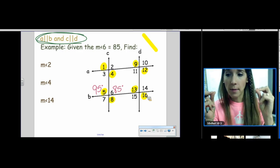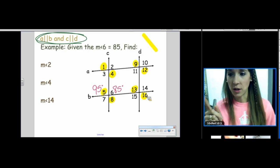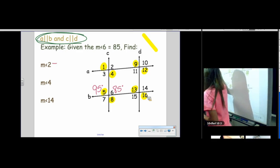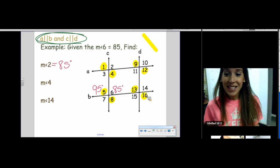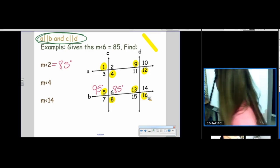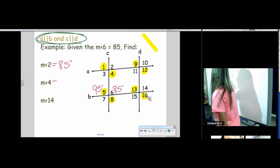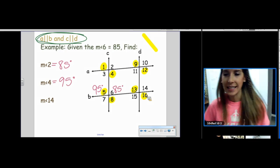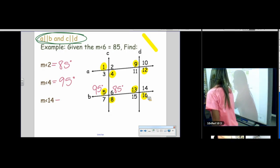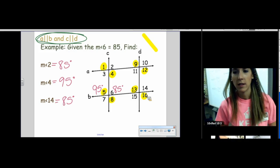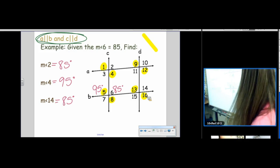Alright. Let's do it. Angle 2. You know right away what angle 2 is. It's not circled. So, it is 85. Angle 4. It is circled. So, it matches all the circled ones. 95 and angle 14. It is not circled. So, 85. Easy, easy. Now, let's try some harder ones.